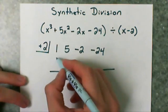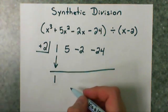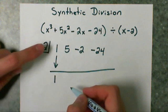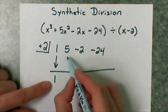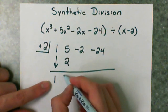I'm going to bring the 1 straight down. We always just bring the first one down. And now, from now on, what I'm going to do is say the number in the box times the number below the line. So 2 times 1 is 2, and that's going to go under the 5. Now I'm going to add these together. 5 plus 2 is 7.